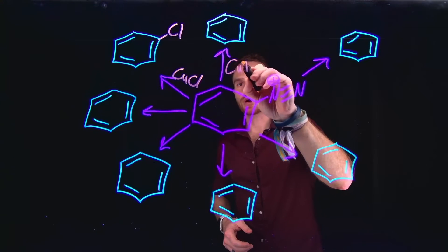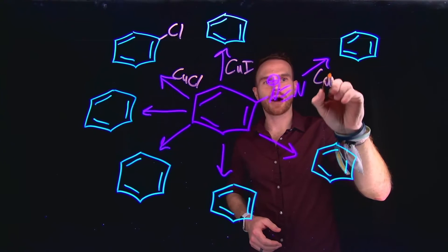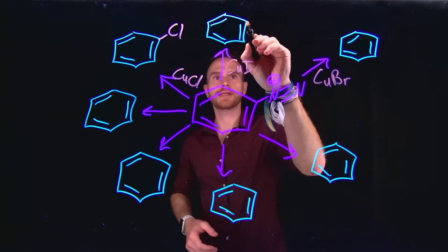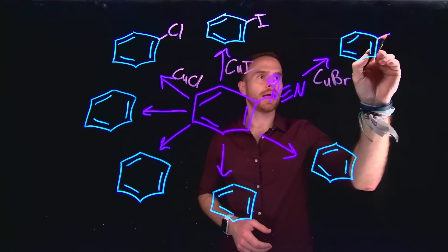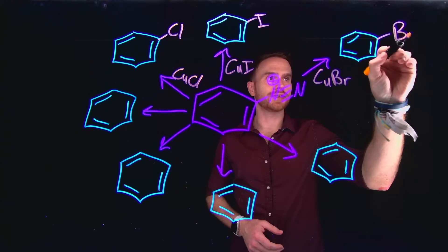Similarly, we can do this for copper iodide and copper bromide to generate the new aryl halide species in exchange for the diazonium salt.